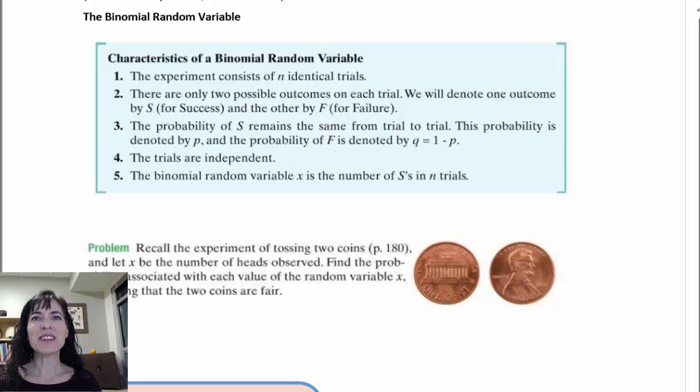Hello there. Let's look at 4.4. This is the binomial random variable. And if we're talking about a binomial random variable, it would be helpful if we define what that is. So, characteristics of a binomial random variable.